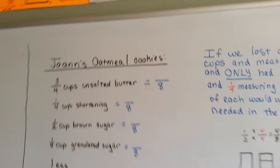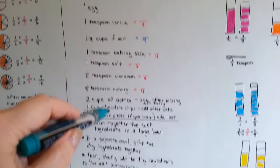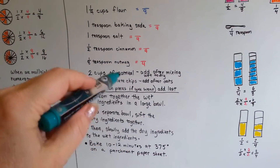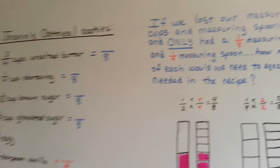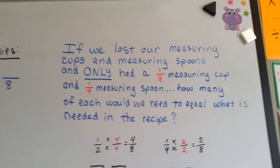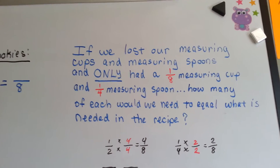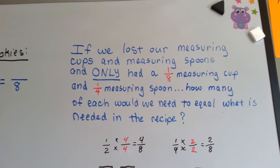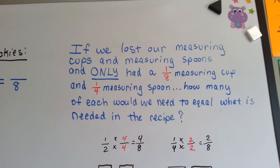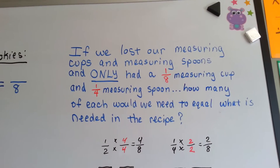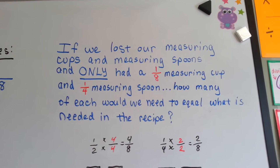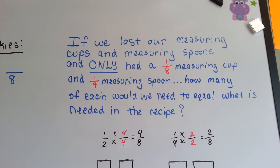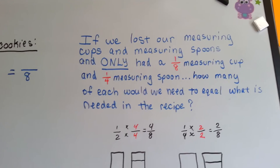Let's get to our oatmeal cookie recipe. There's lots of ingredients, and I have the instructions down here on how to bake them. We lost our measuring cups and measuring spoons, and all we've got left in the drawer is a one-eighth measuring cup and a one-fourth measuring spoon. We have to figure out how much we would need of each of those to equal what the recipe is asking for.